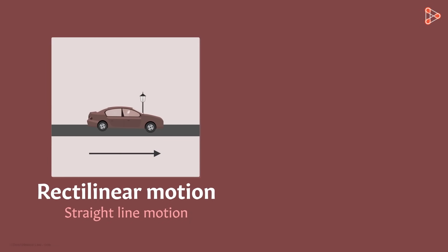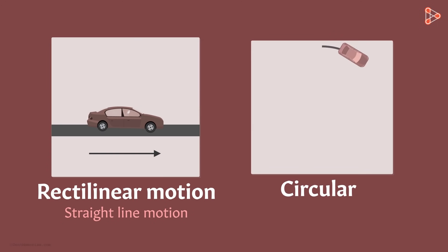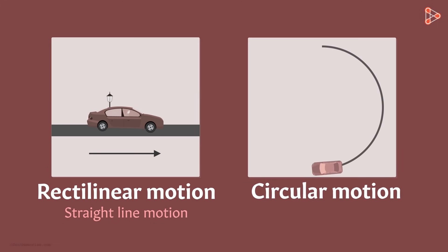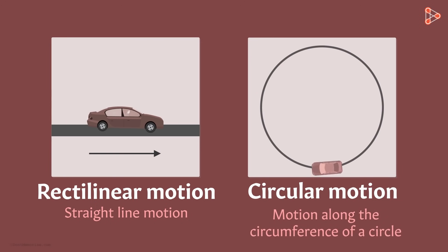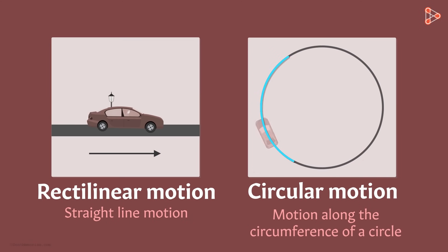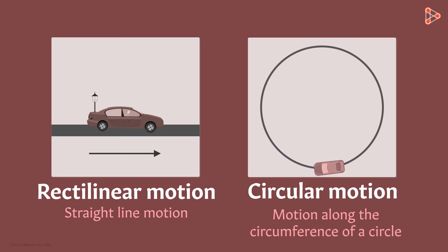But what if the path of a moving object is circular? If an object is moving in circles, it's undergoing circular motion. More accurately, it's defined as the motion of an object along the circumference of a circle. The circumference of a circle is the length of its curved boundary. So if an object is moving along the circumference of a circle, we say it's undergoing circular motion.